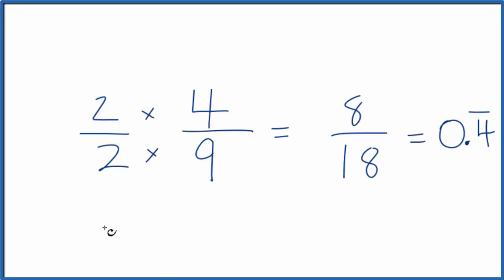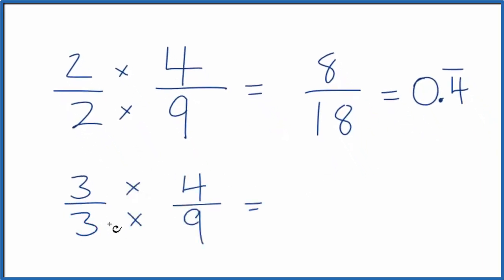Let's do another one. How about 3 over 3? Again, 3 divided by 3 is 1, we're not changing the value.